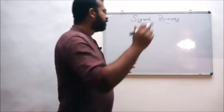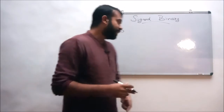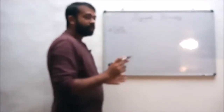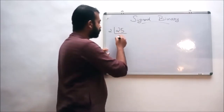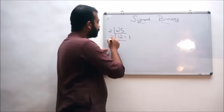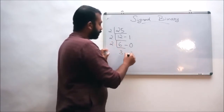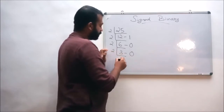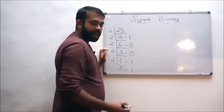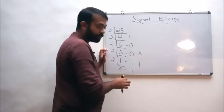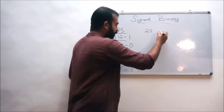For example, if we want to convert the decimal number 25 into a binary number, we continuously divide by two. 25 divided by 2 gives 12 remainder 1. 12 divided by 2 gives 6 remainder 0. 6 divided by 2 gives 3 remainder 0. 3 divided by 2 gives 1 remainder 1. 1 divided by 2 gives 0 remainder 1. Reading remainders from bottom to top, 25 is equivalent to binary 11001.